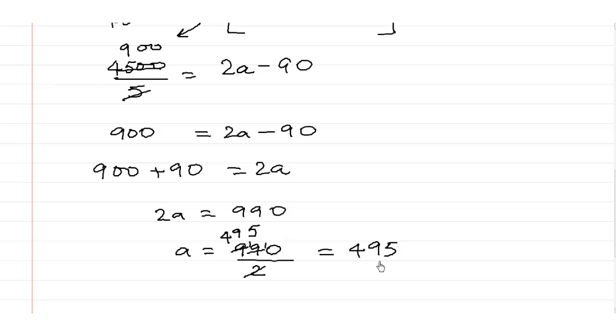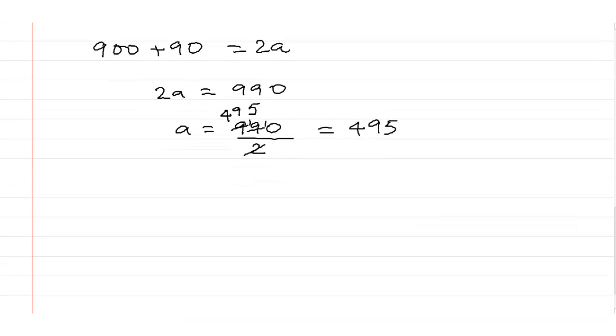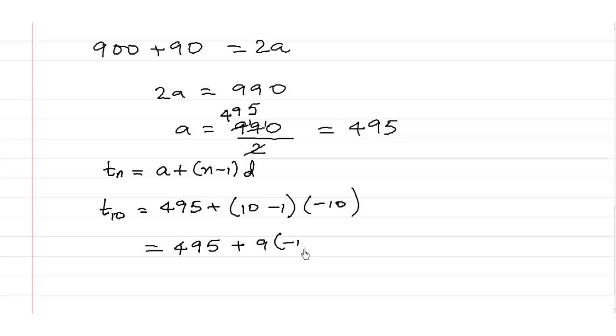So our initial guess that we could start with 500 rupees was close. In fact it starts with 495 rupees. And now we shall find what is T10. In order to find that we shall use the formula for TN. TN is equal to A plus N minus 1 times D. So T10 is equal to 495, the number that we just got, plus 10 minus 1 into the common difference which is negative 10. So it is equal to 495 plus 9 into minus 10, which is equal to 495 minus 90, which is equal to 405.